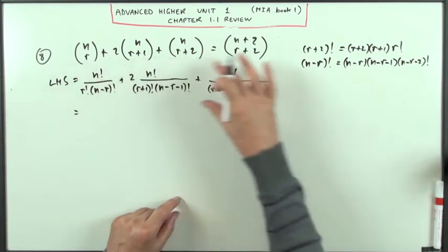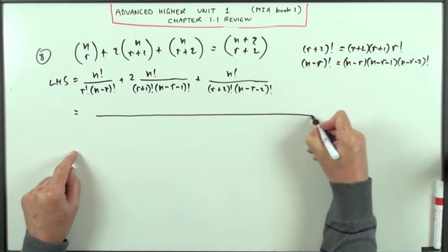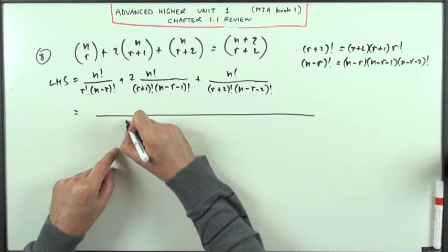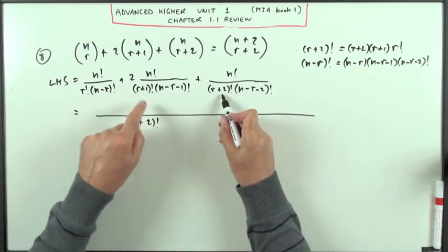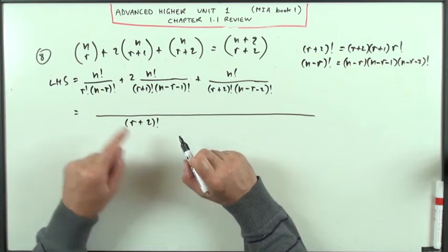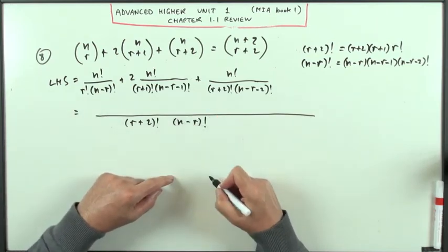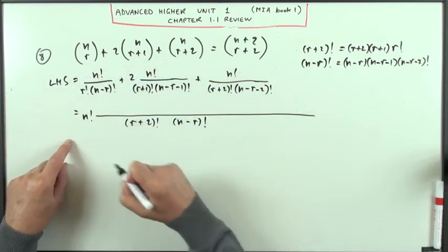So, making that into a single fraction then, I want, right, what's the greatest denominator I can have? I've got r plus two factorial for that, they'll all go into that, and for the other one, n minus r factorial. The other thing is I'll take out the n factorials just as a common factor just now, so I'll put that at the beginning.